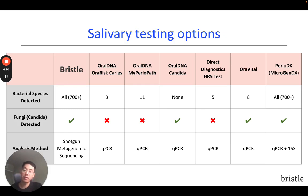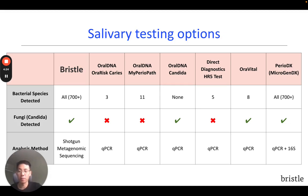This is different from the Bristle test, which uses a newer technology called Shaka metagenomic sequencing. This allows us to profile the community as a whole — not just 11 different pathogenic species, but also the dozens of beneficial species that we know are really important and impact oral health.